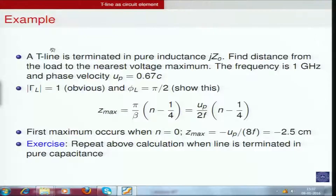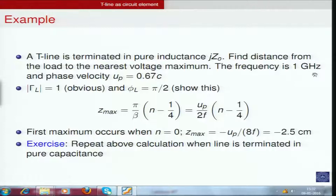Here is an example: a transmission line is terminated in a pure inductance Z_L = j*Z0. This is pure inductance because of the j factor — for a given frequency, we chose L such that omega*L = Z0. The frequency is 1 GHz and the phase velocity is 0.7c, meaning the medium filling the conductors is not free space. Find the distance from the load to the nearest voltage maximum.